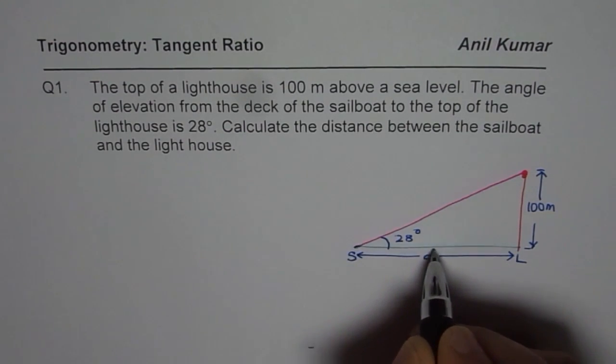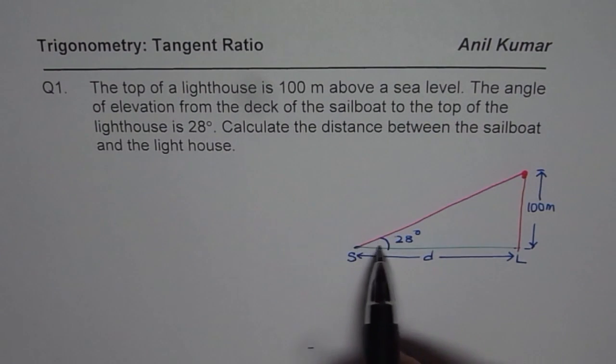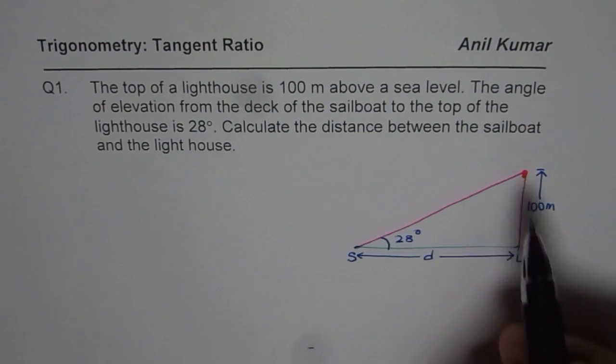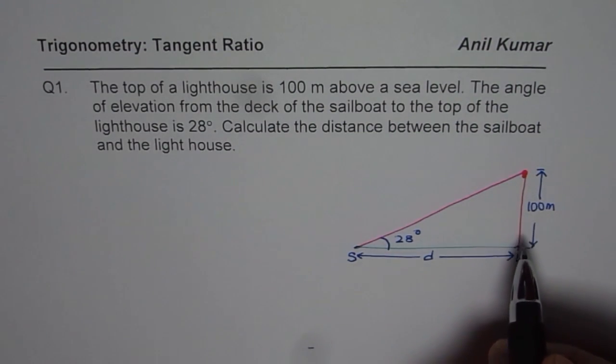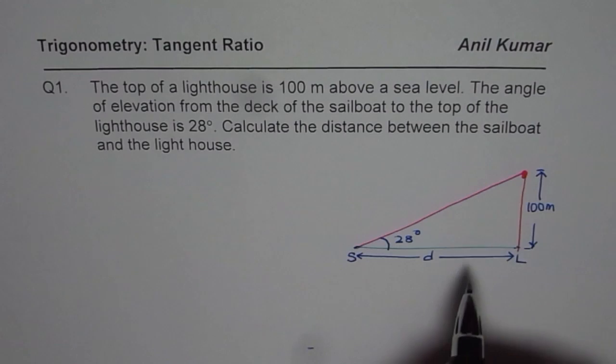Because the sailboat is going to reach the lighthouse right there at the sea level. Do you understand? Not this distance. So at times you could make that mistake. But remember the distance is S to L. That is the distance which we need to find.